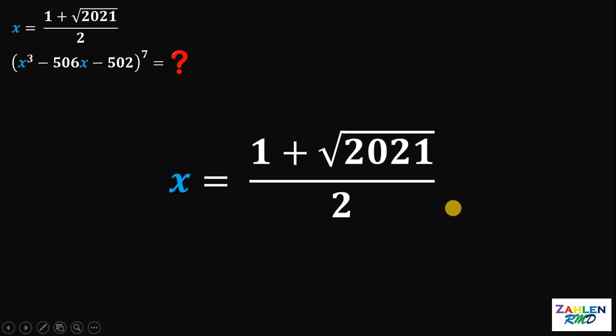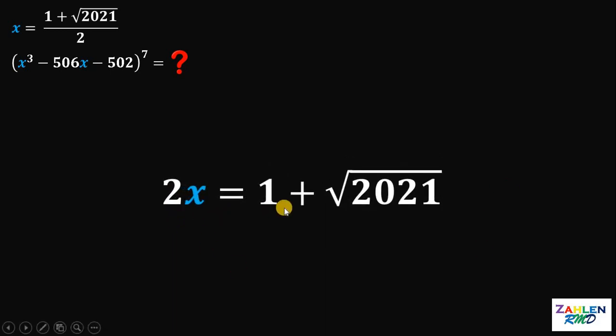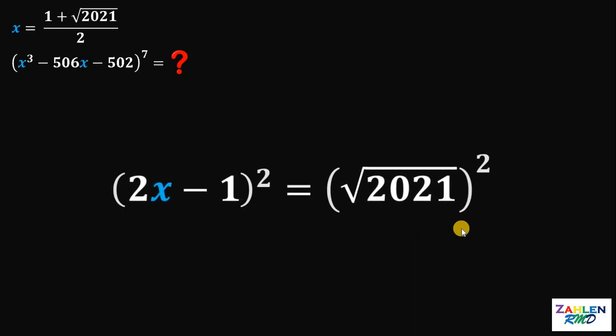Now, let's simplify first this equation. Let's multiply by 2 on both sides. This will give us 2x equals 1 plus square root of 2021. Now, subtract 1 on both sides. And then, cancel out this square root by raising both sides by 2.